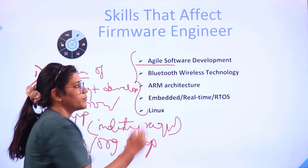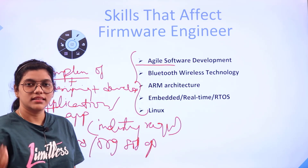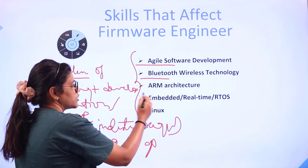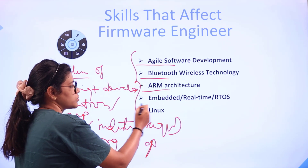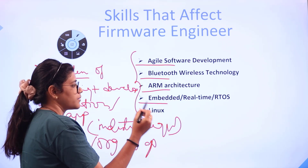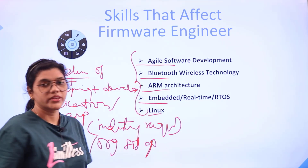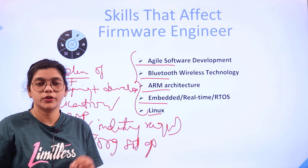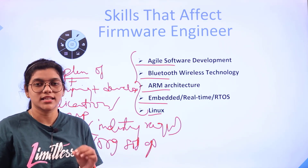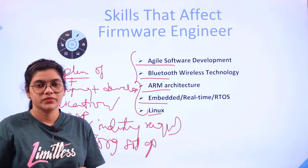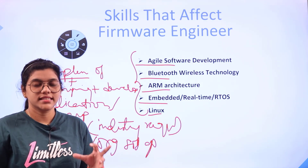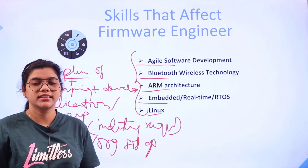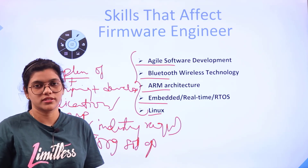Aligning software development is the first and foremost skill the person should know. Key skills include Bluetooth, wireless technology, ARM architecture, embedded real-time RTOS, and Linux. A firmware engineer should also be proficient in programming languages such as C and C++. In accordance with all of these skill sets, you will be placed into various categorized job roles.